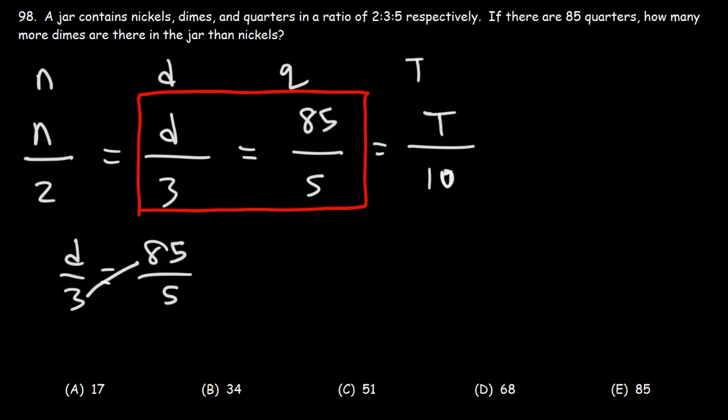3 times 85, that's going to be 255, and that's going to equal 5 times d. Dividing both sides by 5, 255 divided by 5 is 51. So the number of dimes in the jar is equal to 51.